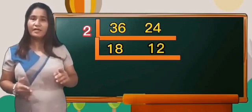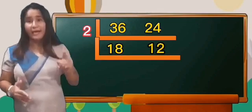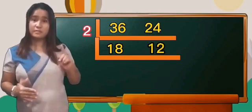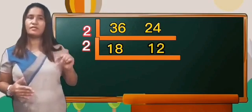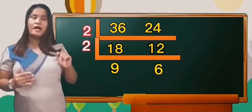And find the smallest prime number that is divisible by 18 and 12. We can use number 2 again. So, we will divide now: 18 divided by 2 equals 9, and 12 divided by 2 equals 6.